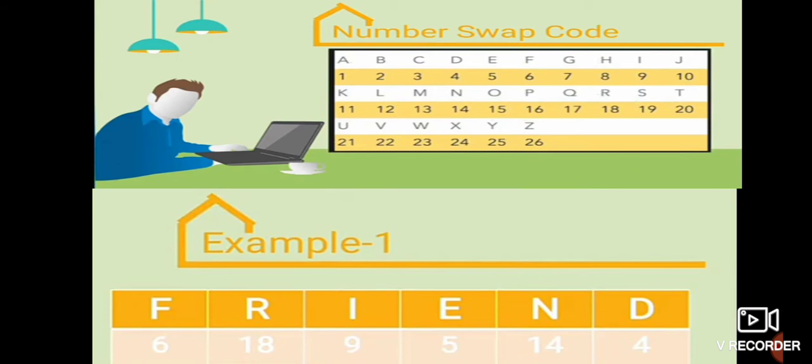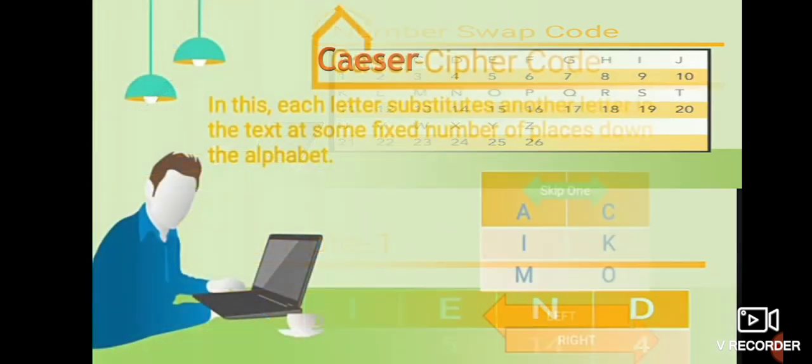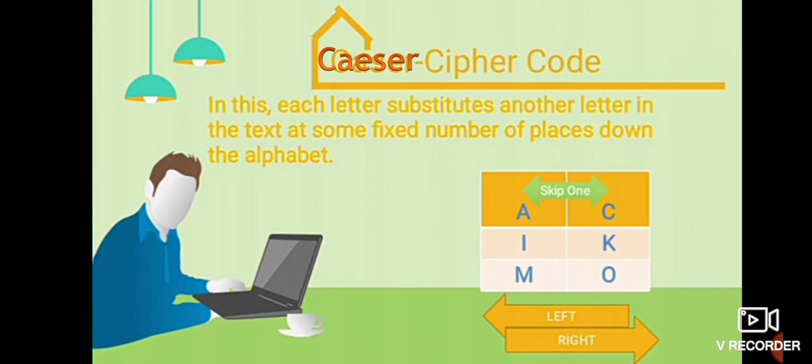So, example one is your friend, F-R-I-E-N-D. So, let us have a look. What is the position of F there? I think it is 6, R-18, I-9, E-5, N-14, D-4. So, class, now check the number assigned to the letter. We have checked. So, the code for the word friend is 6-18-9-5-14-4. So, all the letters in the alphabets are assigned numbers. So, we can use this in ascending or descending order.